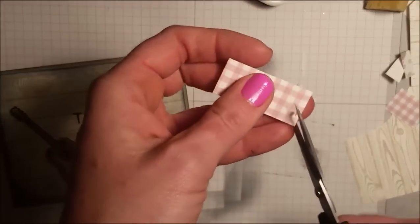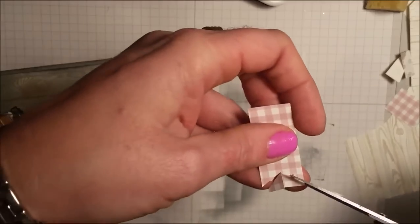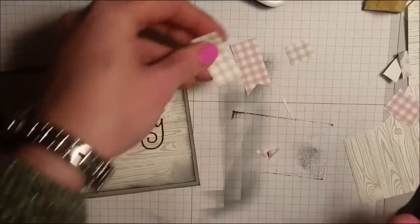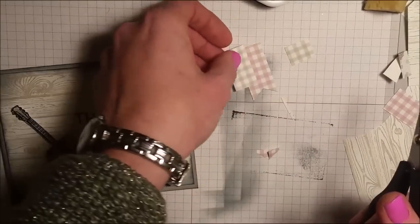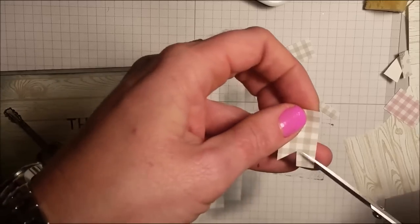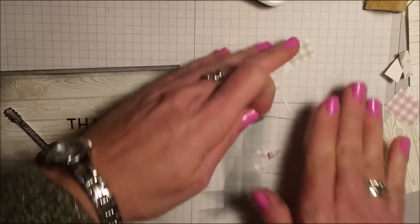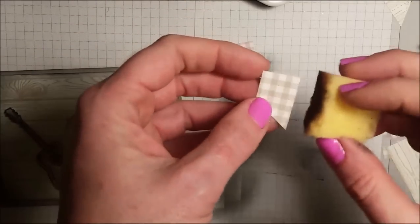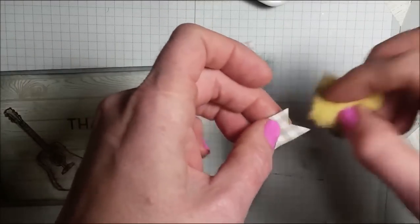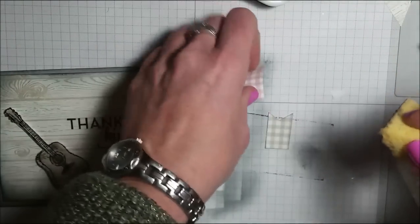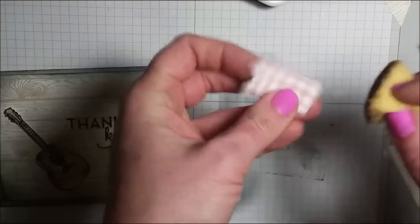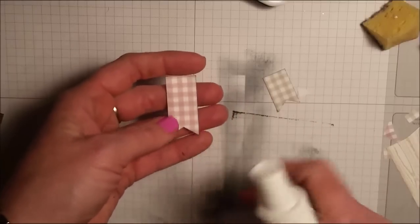I want one to be a little bit longer than the other. And then I'm just going to cut my little leg portion here. And this one's going to be a little bit smaller and do the same thing. Okay, so once that's done, I'm also going to sponge the edges.